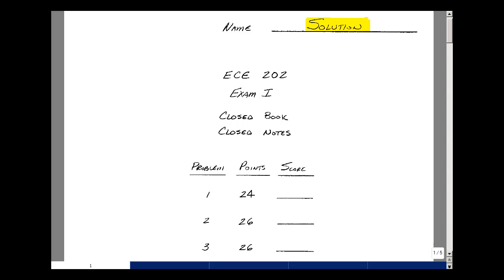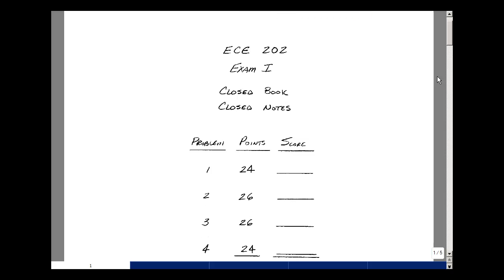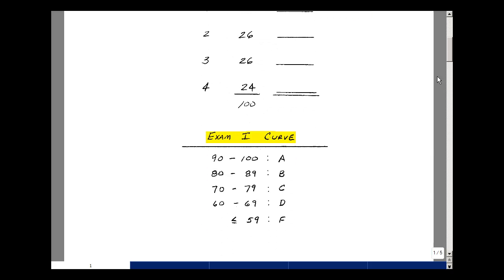This lesson deals with the solution to exam number one. You can find this near the end of the ECE 202 ebook. Exam number one had four problems with varying weights from 24 to 26 points. This was an exam that I actually gave when I taught the course recently, and based on the standard deviation and the average on that exam, I had the following curve.